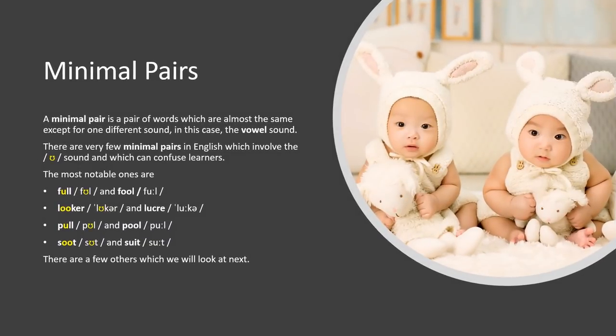A minimal pair is a pair of words which are almost the same, except for one different sound — in this case the vowel sound. There are very few minimal pairs in English which involve this sound and which can confuse learners. The most notable ones are: full and fool, looker and Lucca, pull and pool, soot and suit. There are a few others which we will look at next.